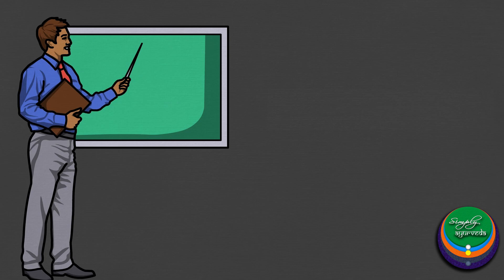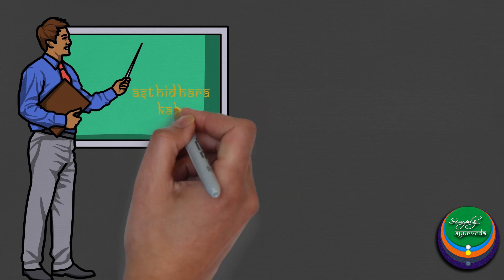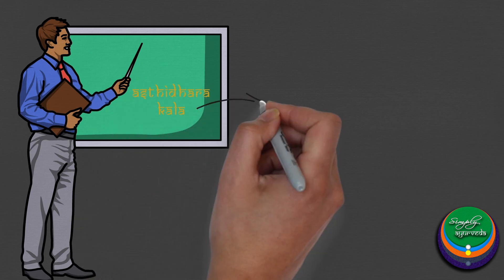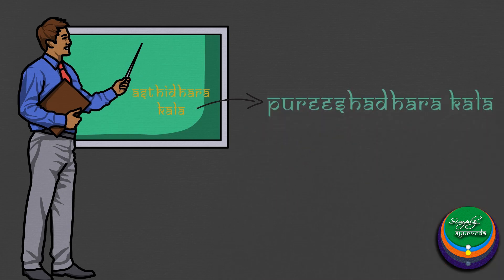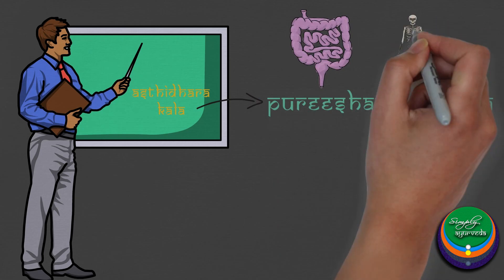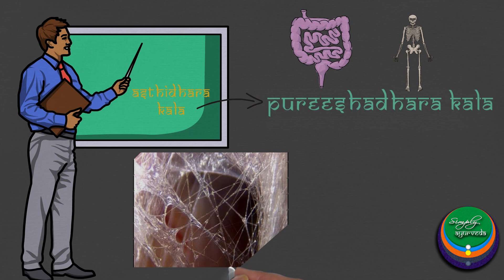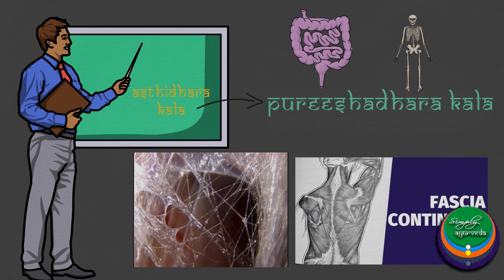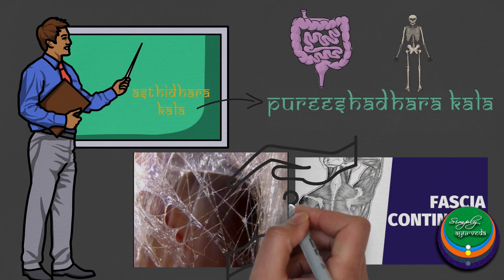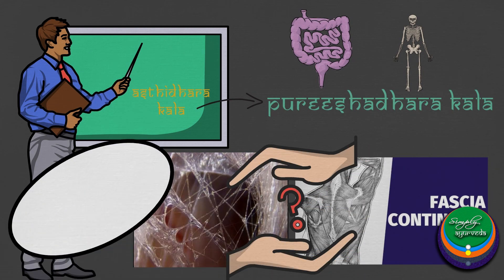Have you heard about Asthi dhara kala? Acharya Dalhana has mentioned in the fourth chapter of Kalpastana that Purishadara kala itself is Asthi dhara kala. Kala being the kledha present between the dhatus and their ashyas, how can Asthi dhara kala be considered the same as Purishadara kala? Let us know your thoughts by commenting on this video.